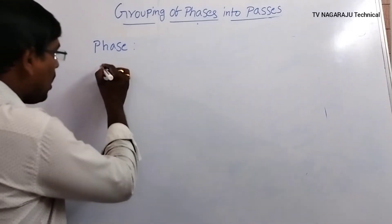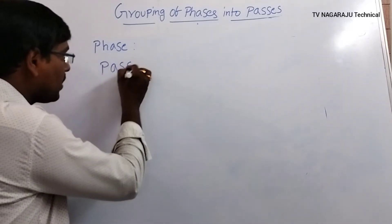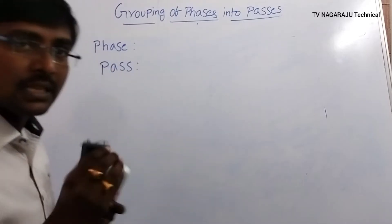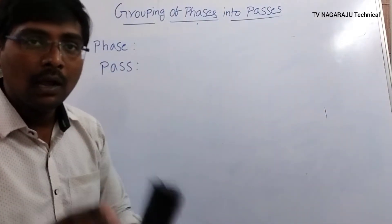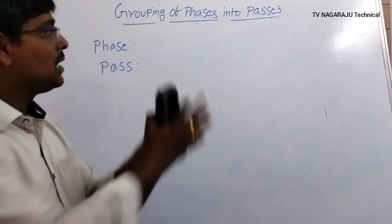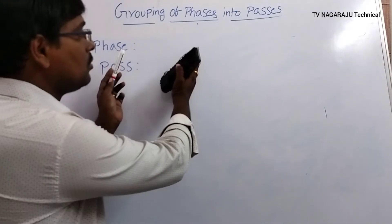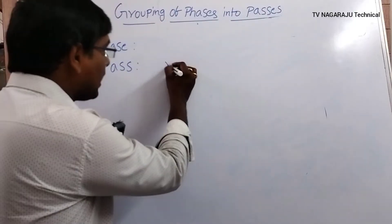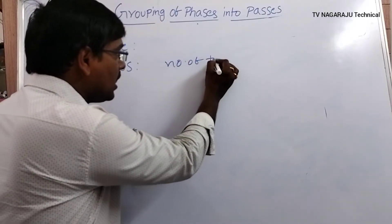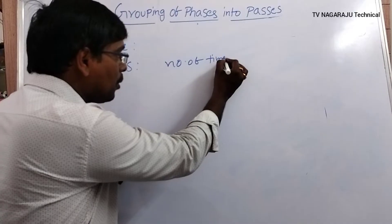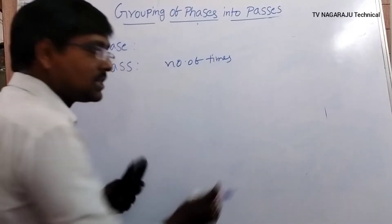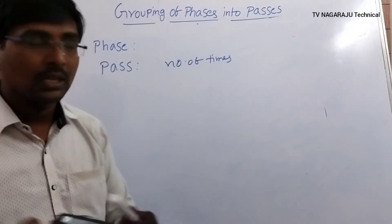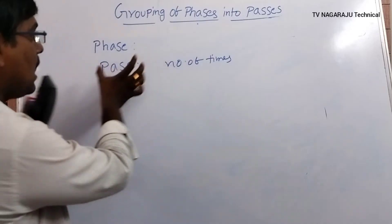What do you mean by pass? A pass is the number of times a source program is scanned. The number of times a source program is scanned during compilation is called a pass.